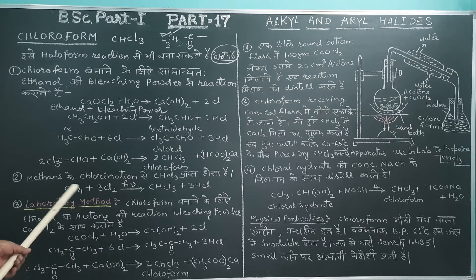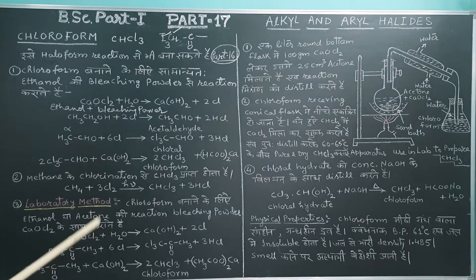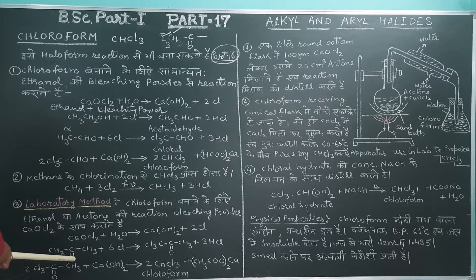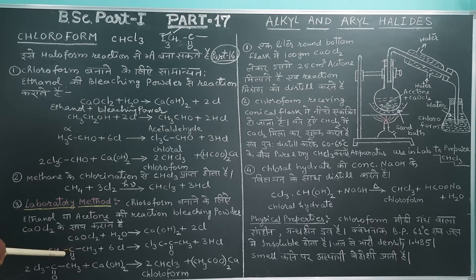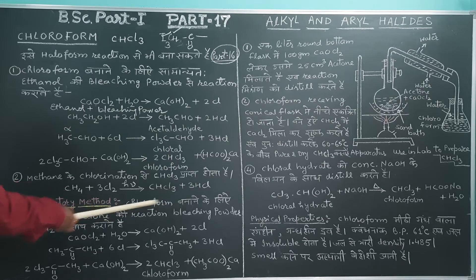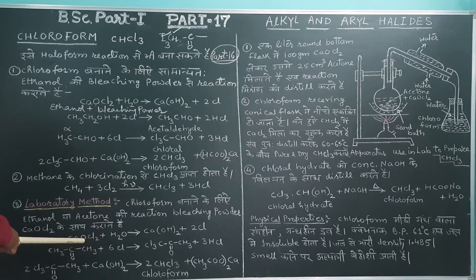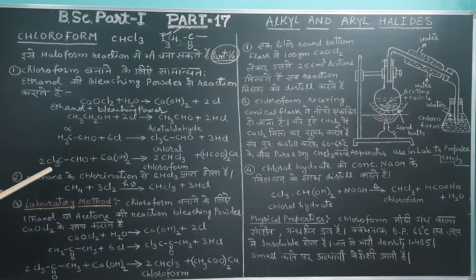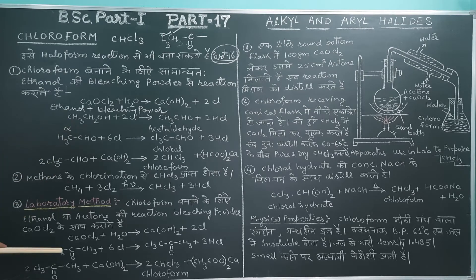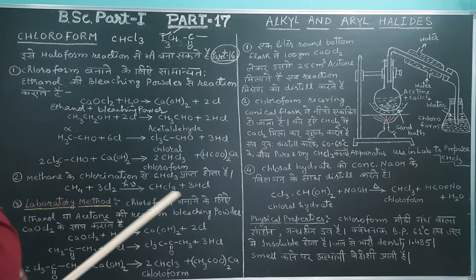Now we start the laboratory method. In the laboratory, to prepare chloroform we use either ethanol or acetone. The common thing here is: I explained the ethanol method above; now I am explaining using acetone. The reaction of acetone with bleaching powder CaOCl₂ is carried out. This is also the laboratory method — when we use ethyl alcohol or acetone. Here, acetone plus CaOCl₂ — in the reaction mixture.